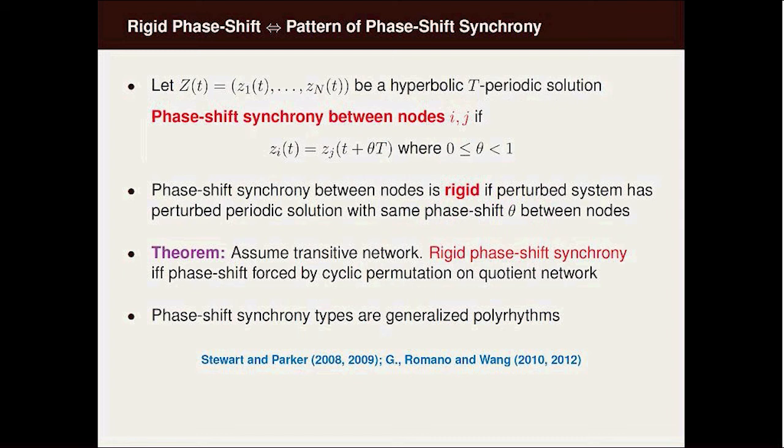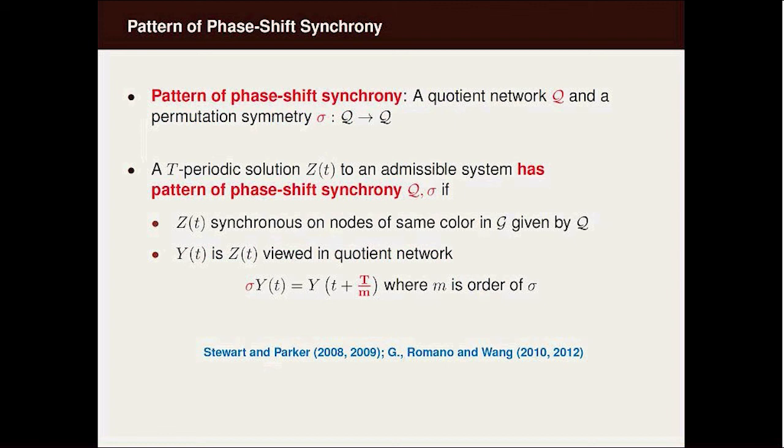Now to try to explain the theorem, let Z of T be a periodic solution where two nodes i and j have this phase shift synchrony. Then this can come about only if the phase shift is forced by a cyclic permutation on a quotient network.